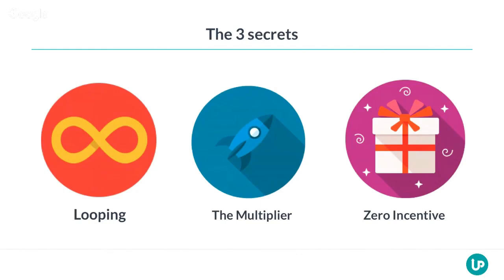The second secret is what I call the Multiplier — this will quite literally multiply your email list. Some so-called gurus have been teaching things that seem great but are actually very risky. I'm going to show you exactly what that is and, more importantly, how to fix it. When you apply this, you'll be able to multiply the amount of leads you're getting instantly.